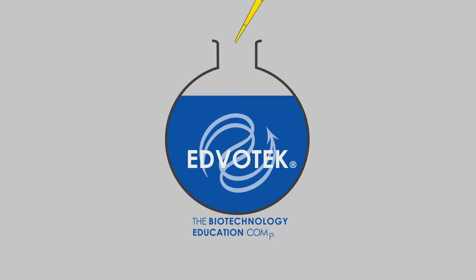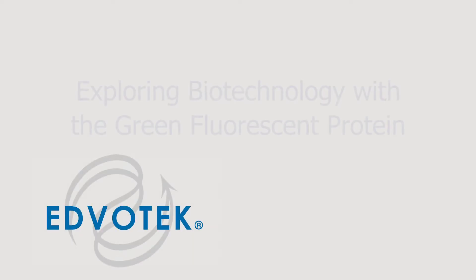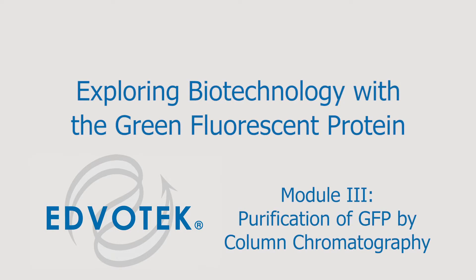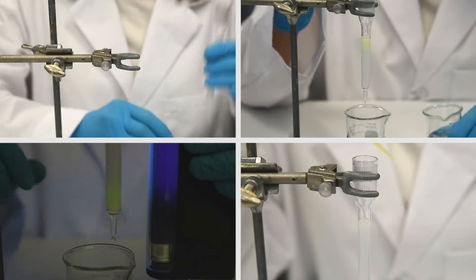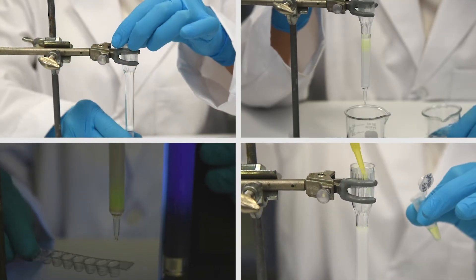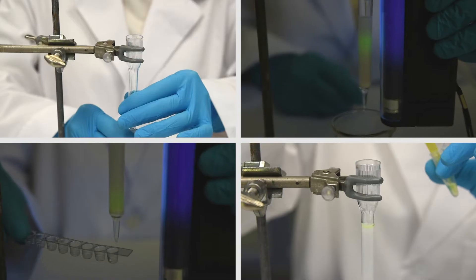Edvotech Instructional Videos presents Exploring Biotechnology with the Green Fluorescent Protein Module 3: Purification of GFP by Column Chromatography. In Module 3, the GFP containing cellular lysate from Module 2 will be purified by column chromatography.